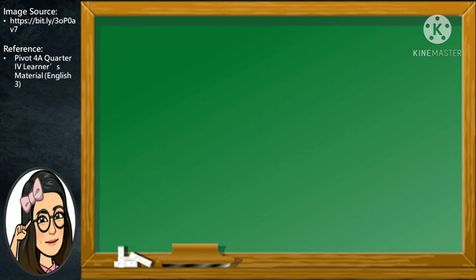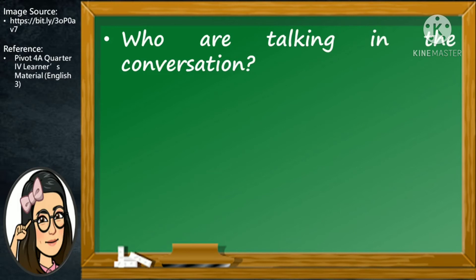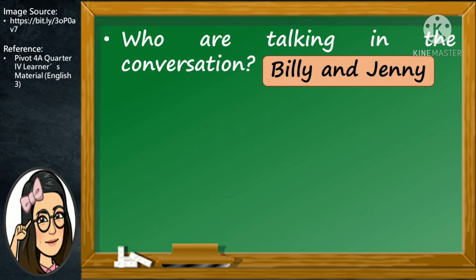Did you understand the conversation that you have read? Now let me see if you do. I want you to try to answer the following questions. Who are talking in the conversation? Excellent! The persons talking in the conversation are Billy and Jenny.